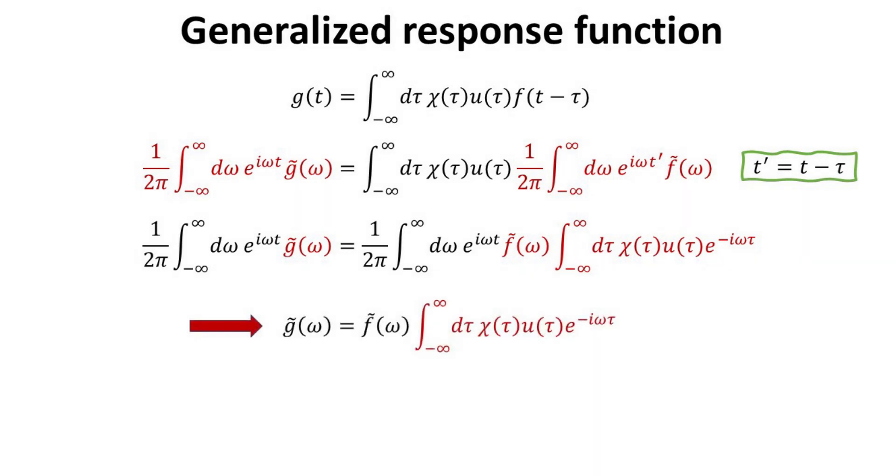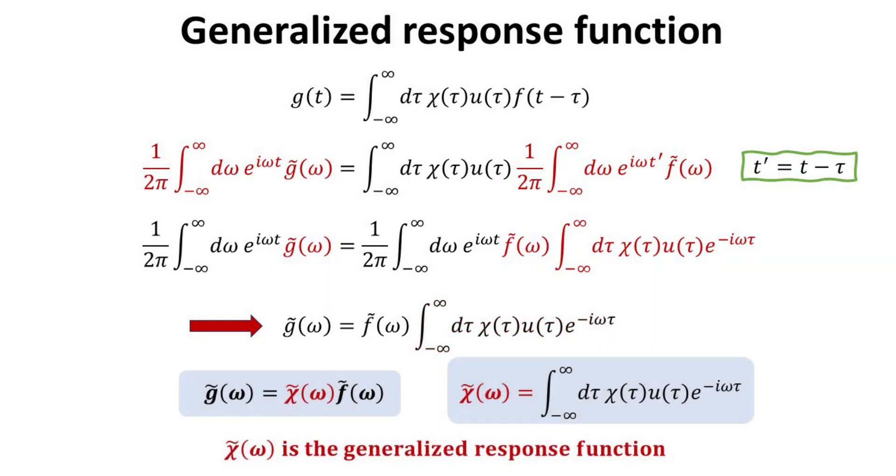The highlighted term is the Fourier transform of chi times the step function. Thus, we arrived at the well-known result, that the output g tilde omega equals to chi tilde omega times f tilde omega. Here, chi tilde omega is known as the generalized response function. It's worth repeating again. In the Fourier domain, the output function g tilde is just the product of the generalized response function, chi tilde, and the input function f tilde.